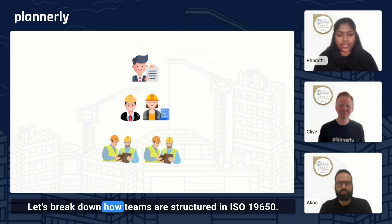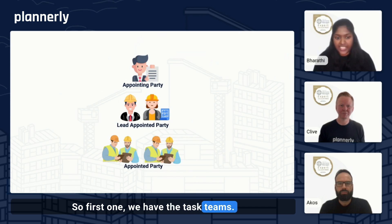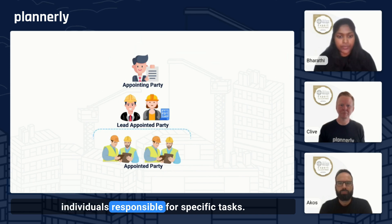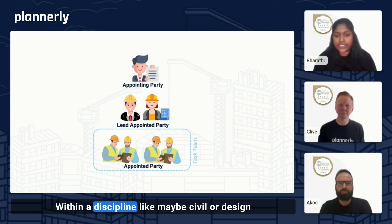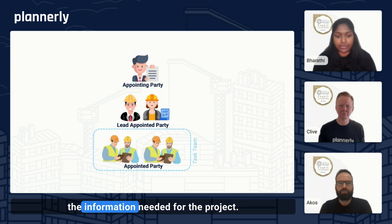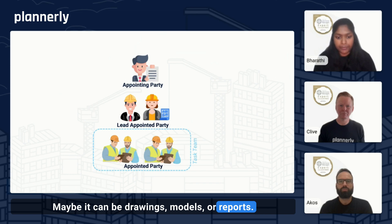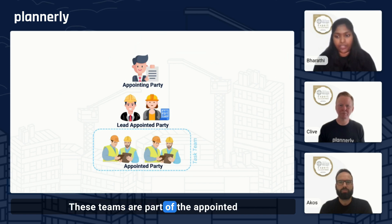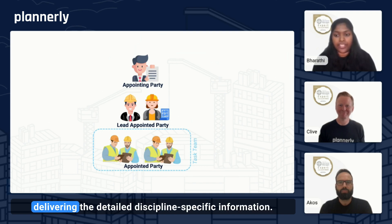Let's break down how teams are structured in ISO 19650. First, we have the task teams. They are small focused groups or individuals responsible for specific tasks within a discipline, like a civil or design team or mechanical engineering. They work on producing the information needed for the project — maybe drawings, models or reports. These teams are part of the appointed party and their role is critical in delivering the detailed discipline-specific information.